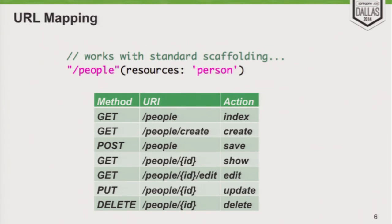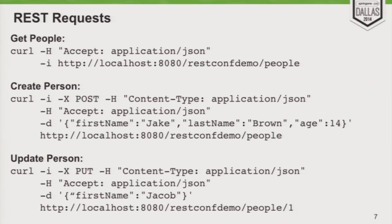We've expressed that /people should be associated with the person controller and all these mappings get generated for us. Even with just that, we've got some pretty compelling stuff for building RESTful interfaces — and it turns out this is really just the first four percent. There's a whole lot more the framework does to help with this.